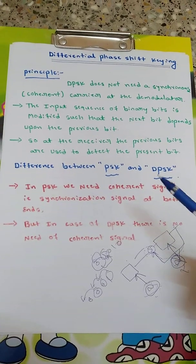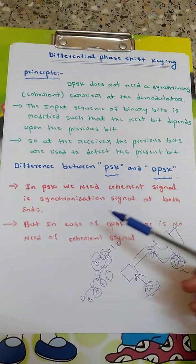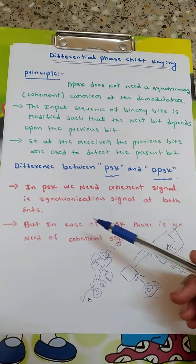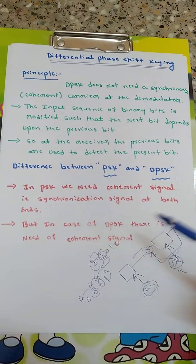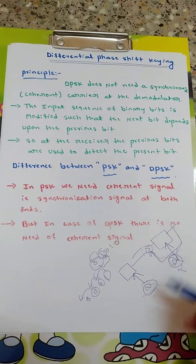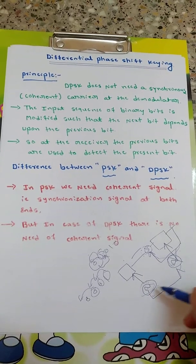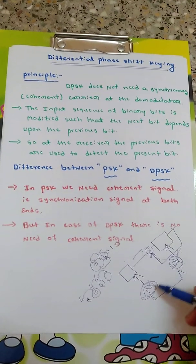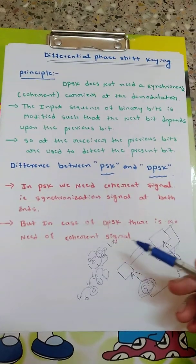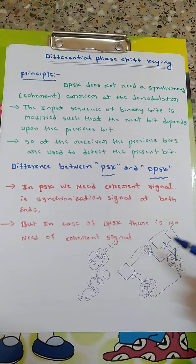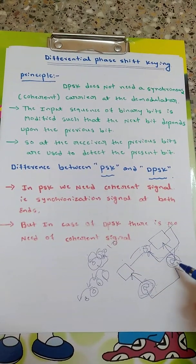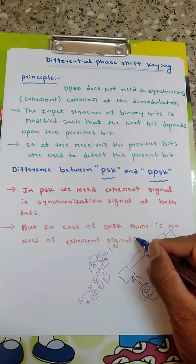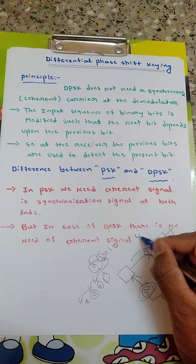Now the difference between PSK and DPSK: in PSK, we need a coherent signal, that is a synchronization signal, at both ends. But in case of DPSK, there is no need for a coherent signal at the receiver side.